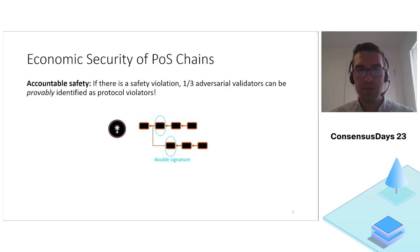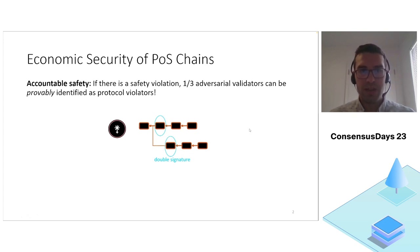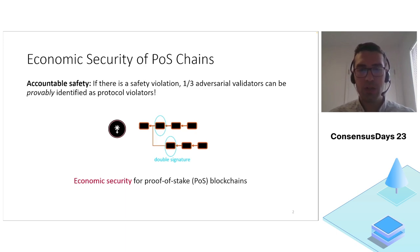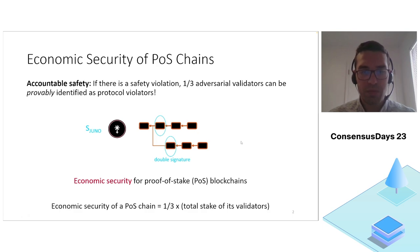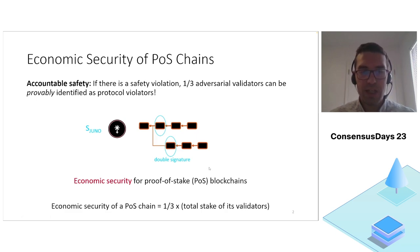Thus these validators must be adversarial and they would be identified using these double signatures. The goal behind accountable safety is to provide an economic notion of security for proof of stake blockchains. In the event of a safety violation, once we identify the adversarial validators that have violated the protocol rules, we can slash their stake or otherwise impose financial punishments on them. In this example where a third of the validators must be adversarial and will be identified, the economic security — namely the cost to attack safety — will be equal to a third of the total stake on that chain.